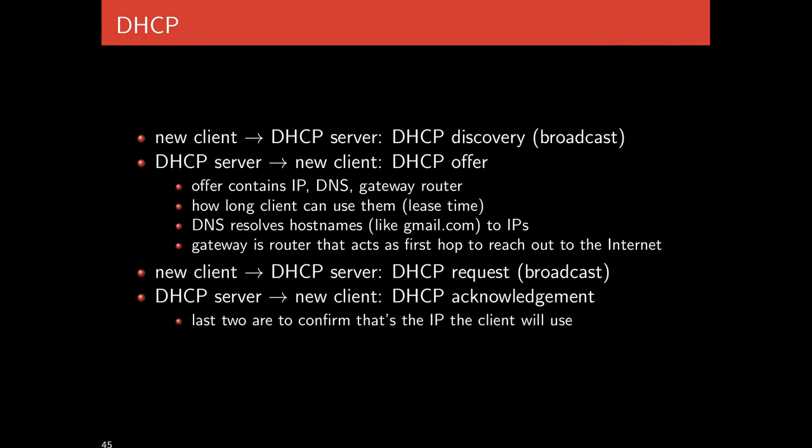The DNS resolves host names and the gateway is effectively the first hop out to the internet. The new client then replies back to the DHCP server with a DHCP request — again a broadcast. The client has looked at the offer, decided it likes it, and tells the server it will take it. The DHCP server then acknowledges that the client accepted the offer. So: discover, offer, request, ACK.